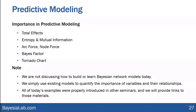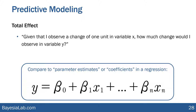Let's start with the simplest measure of importance: the total effect. That's how we refer to it in Bayesian Lab. It basically says: given that I observe a change of one unit in variable X, how much change would I observe in variable Y? That is actually very similar to what you would see as parameter estimates or coefficients in a regression, where you might use betas to represent what a unit change of X does to Y.